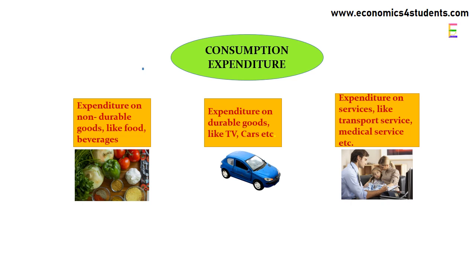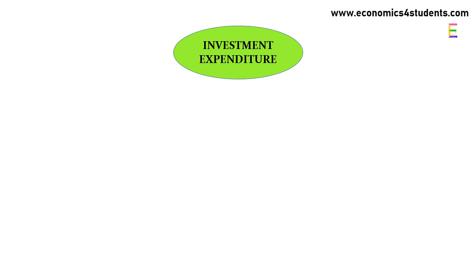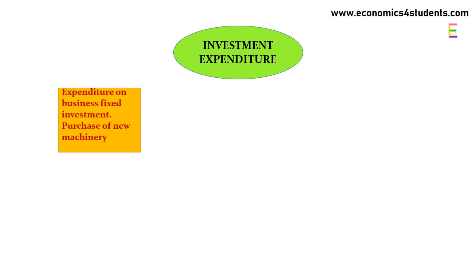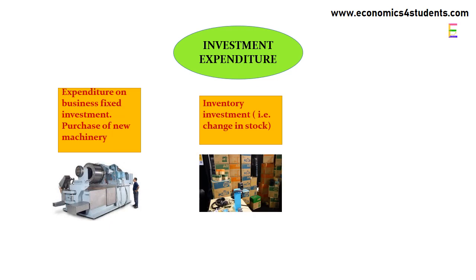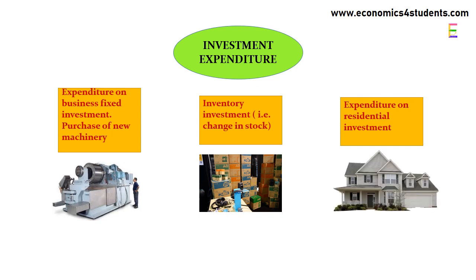The next component of expenditure is investment expenditure by the business sector. It is also divided into three categories: fixed investment, like machineries, equipments, factories, etc.; inventory investment, which is measured by change in stock; and expenditure on residential investment, such as purchase of new houses by the households or landlords.